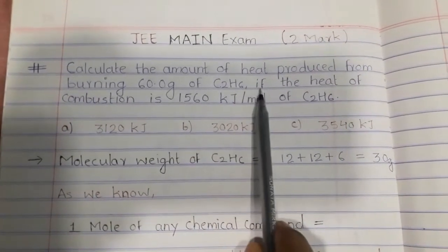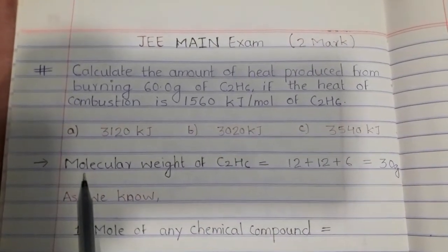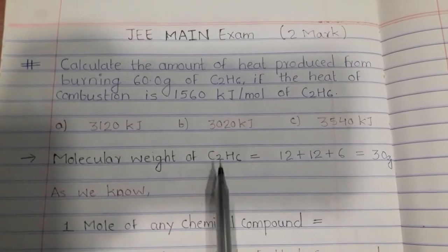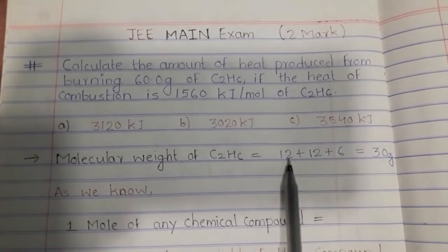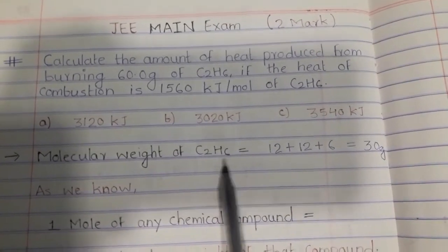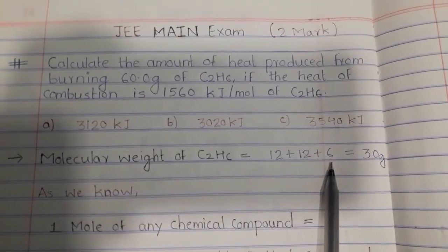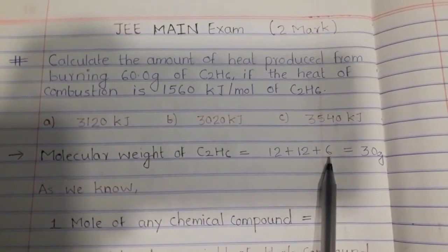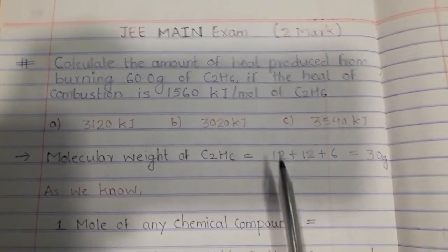We multiply the atomic weight of each element by its count — that will give us the molecular mass. So here we find the molecular weight of C2H6, which is ethanol. We have two carbon atoms: 12 plus 12. Each carbon atom has atomic weight 12. We also have six hydrogen atoms, and hydrogen has atomic weight 1, so we add 6.